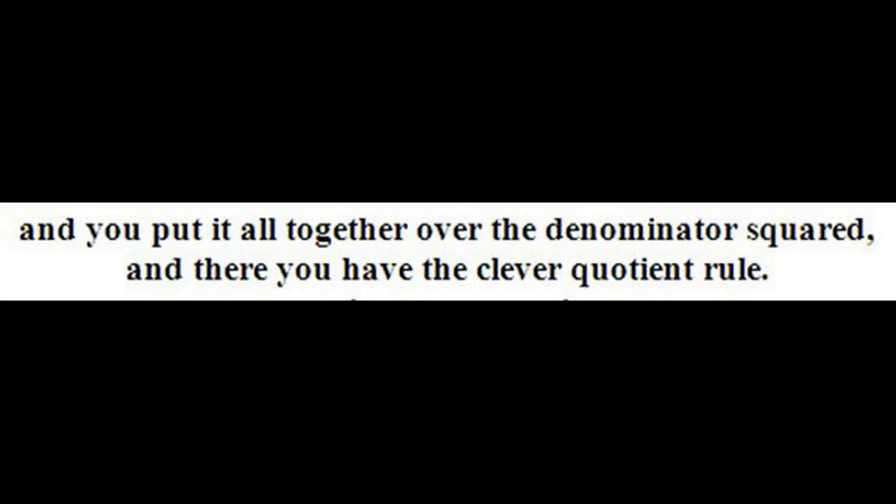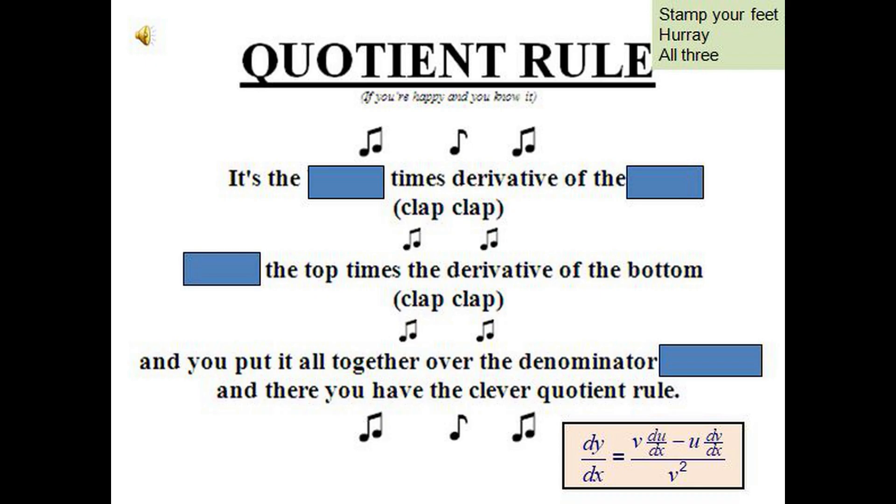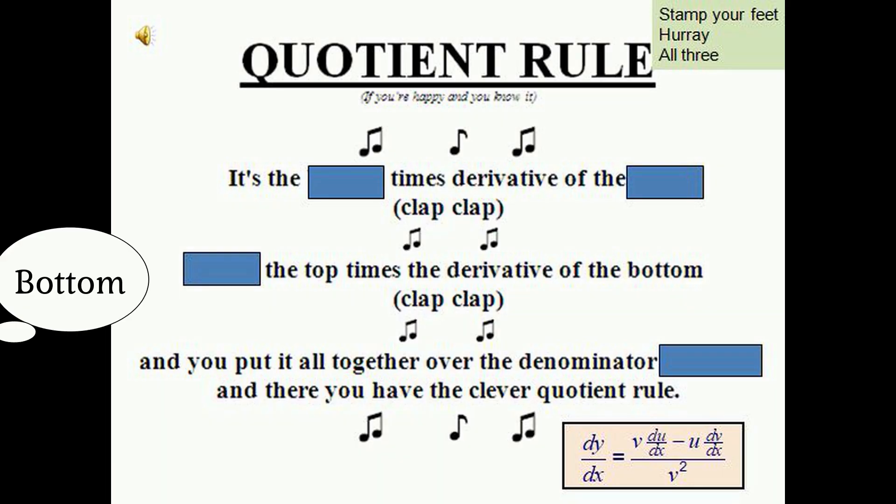It's the bottom times the derivative of the top. Hooray! Minus the top times the derivative of the bottom. Hooray! And you put it all together over denominator squared. And there you have the clever quotient rule. All together.